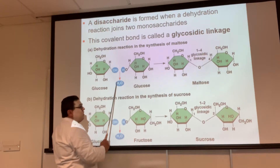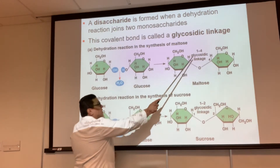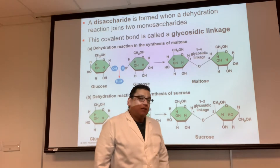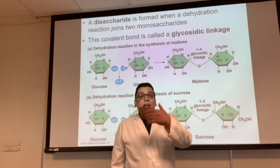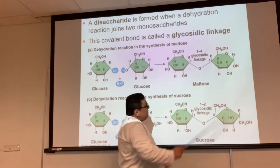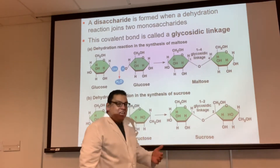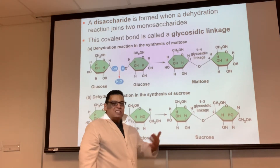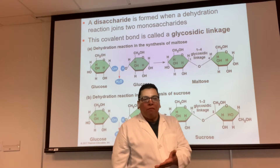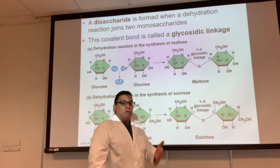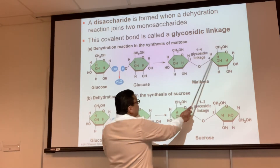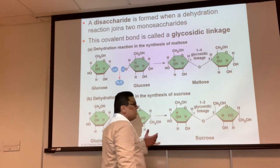We can take two glucose molecules and attach them through dehydration, creating a bond called a glycosidic linkage. It is a covalent bond, but its name is glycosidic. We'll see the same type of covalent bond in proteins and nucleic acids, but with different names. How they're made is the same — dehydration — and how they break is the same — hydrolysis — but the name differs.